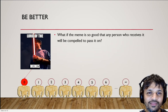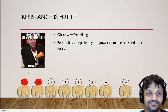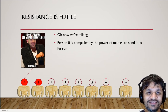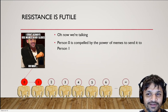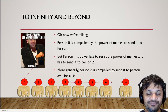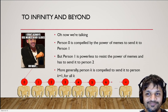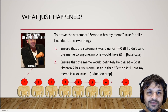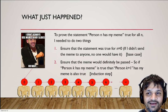But what if I make a meme so good that if someone has it, they're compelled to pass it on — they can't just hold on to it because it's too good? If I'm using that meme and I send it to person 0, person 0 has to pass it to person 1. Similarly, person 1 has no choice but to send it to person 2, person 2 to 3, and so on. More generally, person k is compelled to send it to person k+1 for all k.